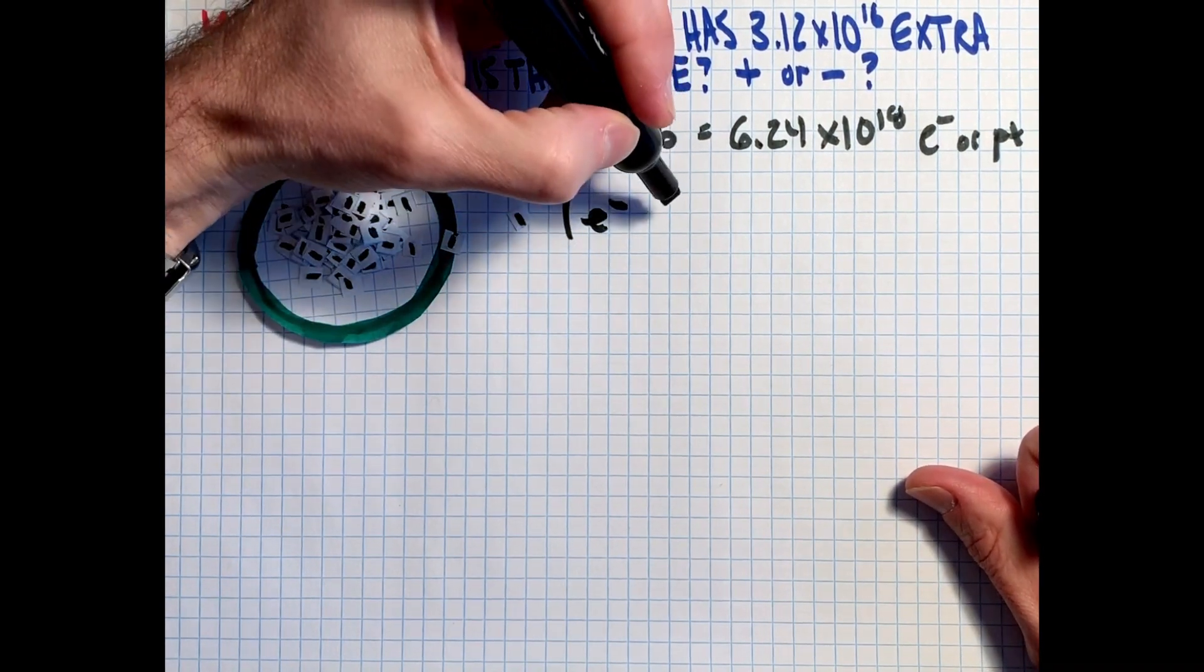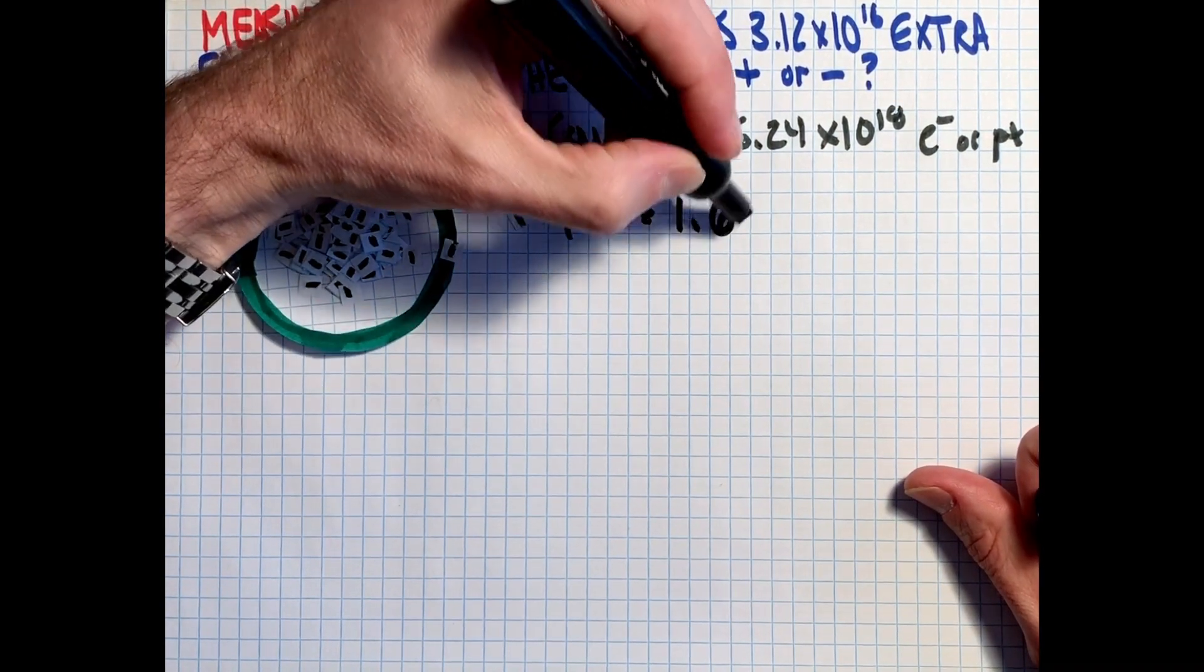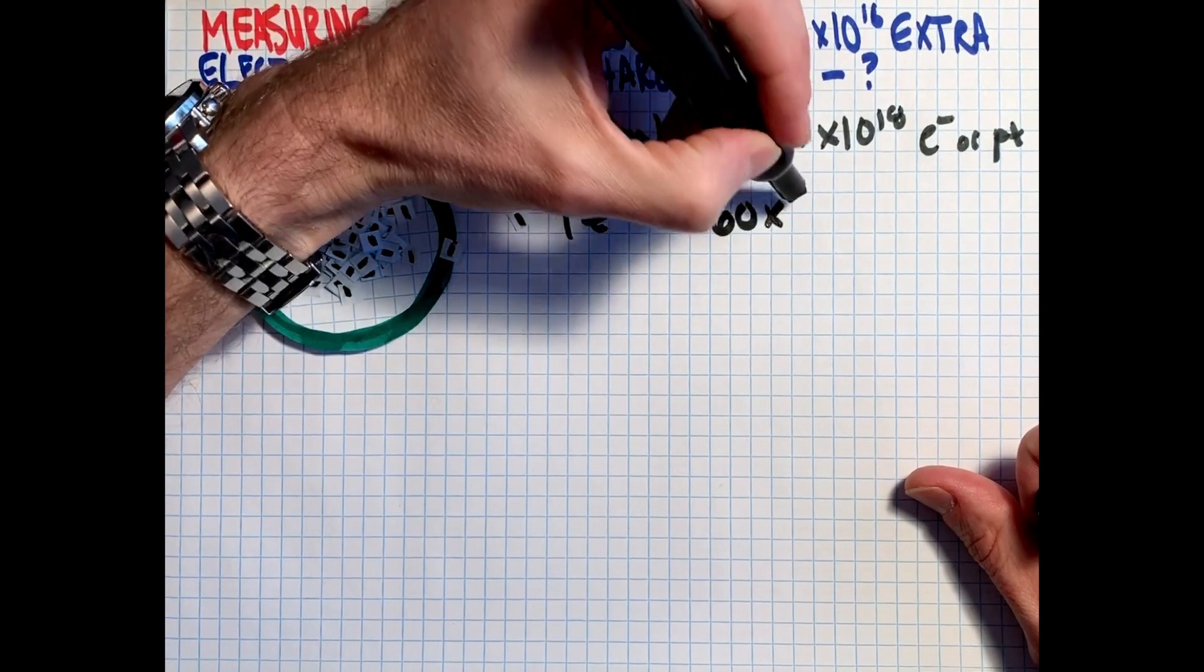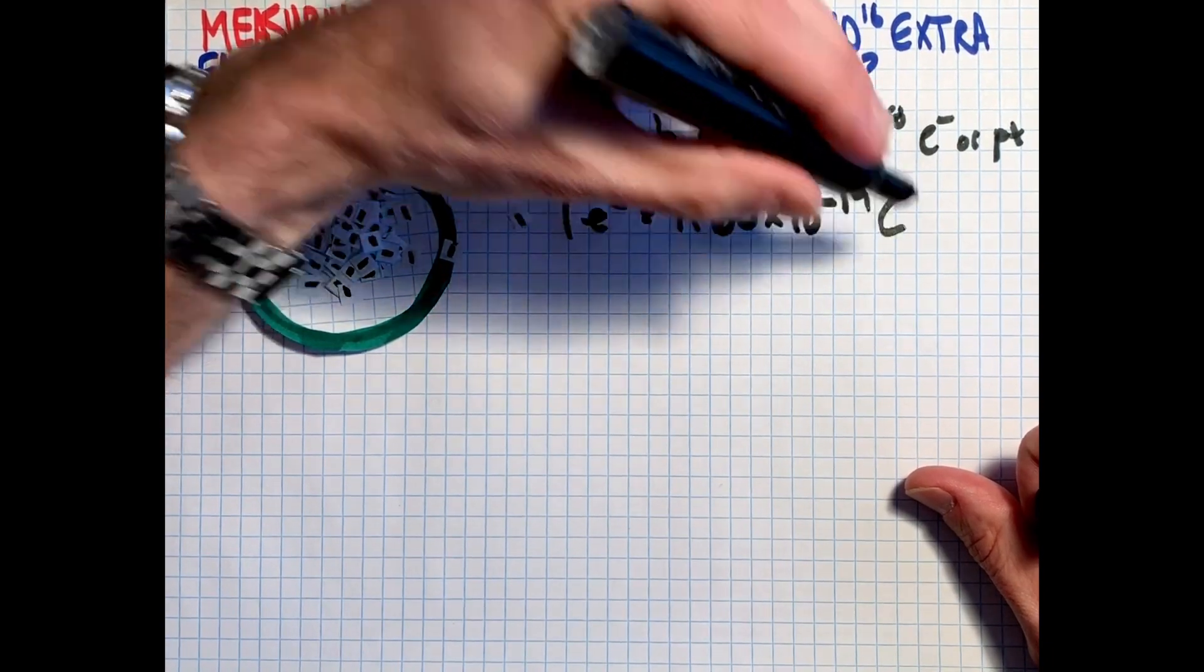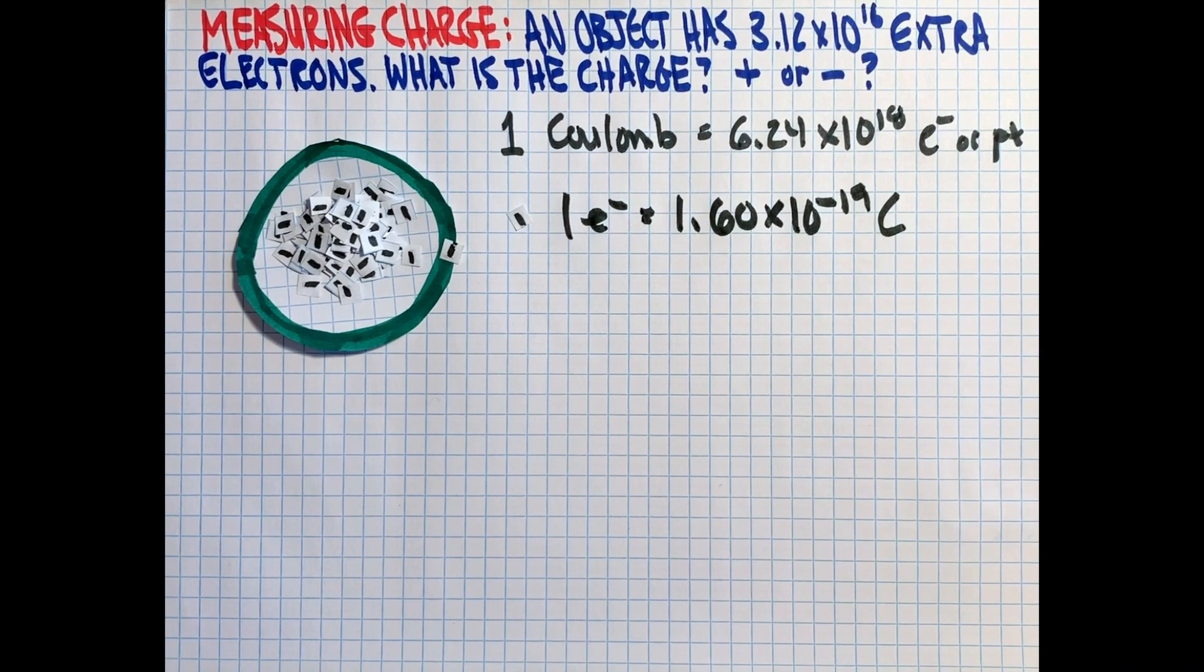One electron has a charge of 1.6 times 10 to the minus 19 Coulombs, which you can get really by taking the definition of a Coulomb, one Coulomb, and dividing it by 6.24 times 10 to the 18, and you get, then on one, it is 1.6 times 10 to the minus 19.